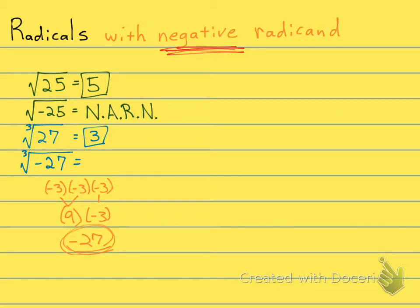So the answer to this, what is the cube root of negative 27? The answer is negative 3. Because negative 3 times itself 3 times will give you a negative.